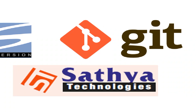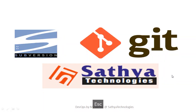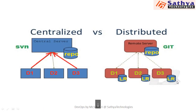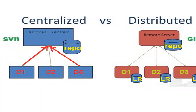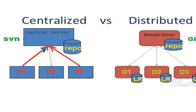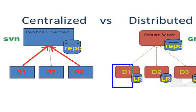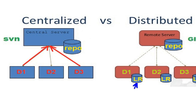If you see the basic differences between centralized and distributed version control systems: in case of centralized, we have a central repository where multiple developers will add their code. But with a distributed version control system, every developer will have their own local repository. First they will add their code to the local repository, then they will commit the code to the central repository.